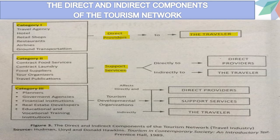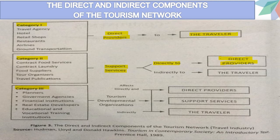The second category is Category 2, which is support services. Support services comprises contract food services, contract laundry, food suppliers, tour organizers, and travel publications. Support services, from the word itself, lends support to the direct providers — it is their helper. For example, a restaurant cannot work without enough food suppliers for ingredients and packaging.